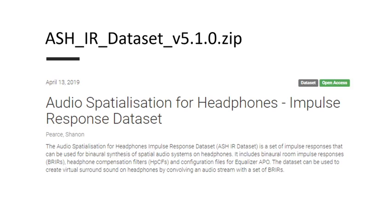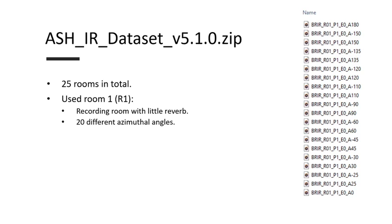After a bit of research looking for B-R-I-Rs, I stumbled across the open-access ASH-I-R dataset, which gave me a set of equalized B-R-I-Rs that could be used to simulate a variety of rooms, including control rooms, listening rooms, seminar rooms, studios, and many more. There were 25 rooms in total, and I only really needed one, so I used R-1 in my work, which was essentially a recording studio with no reverb. There were 20 different B-R-I-Rs, all with different azimuthal angles.